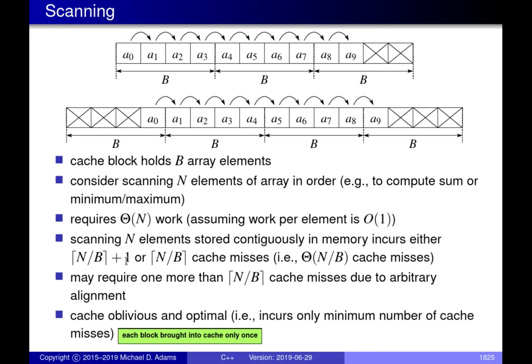The reason for the plus one is also due to alignment. For example, I could slightly modify this example so the array doesn't start aligned on a cache block boundary. Because of this, the total number of blocks in memory spanned by the data is 4, whereas in the aligned case the data only spans 3 memory blocks. Depending on how the data is aligned with respect to memory blocks, you may incur slightly more or fewer cache misses to handle the beginning and end of the array.